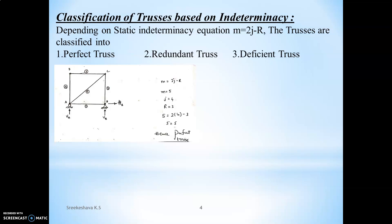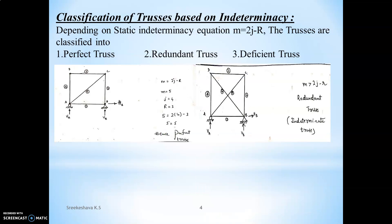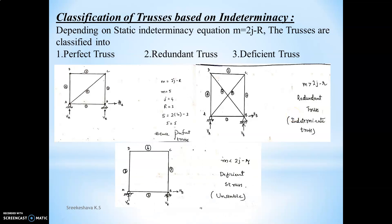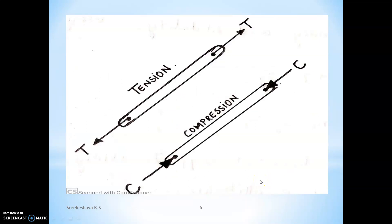The second classification is a redundant truss, where m is greater than 2j minus r. When the number of members exceeds the equation, it is called a redundant or indeterminate truss, due to internal indeterminacy from extra members. For example, adding an extra diagonal bracing increases members to 6, so 6 > 5, making it indeterminate. The third is a deficient truss, where m is less than 2j minus r — like a rectangle without diagonals, which is unstable and not a true truss.